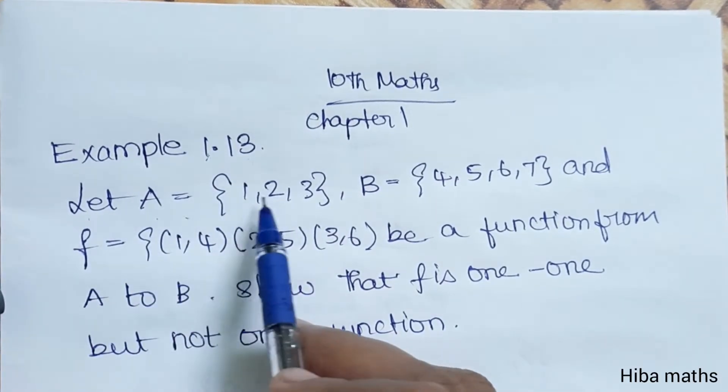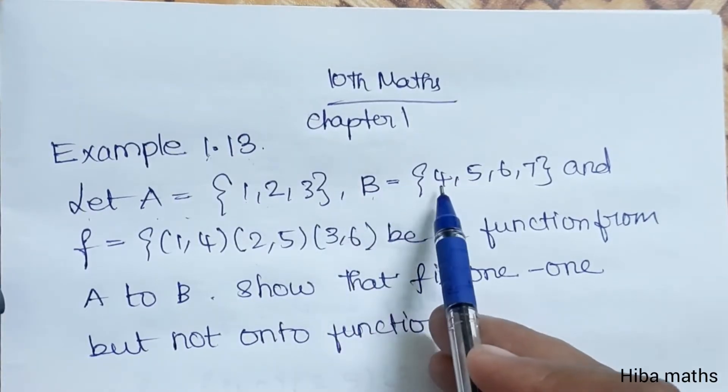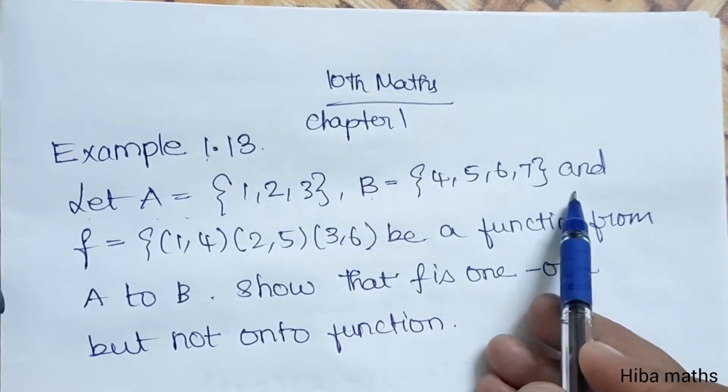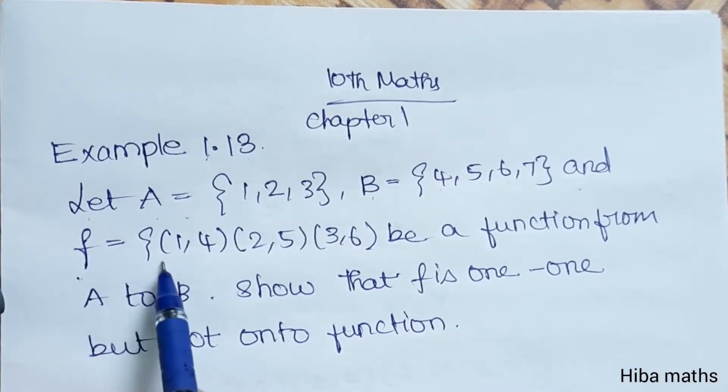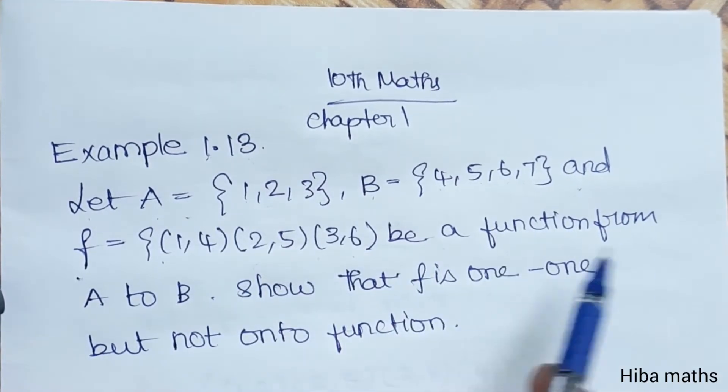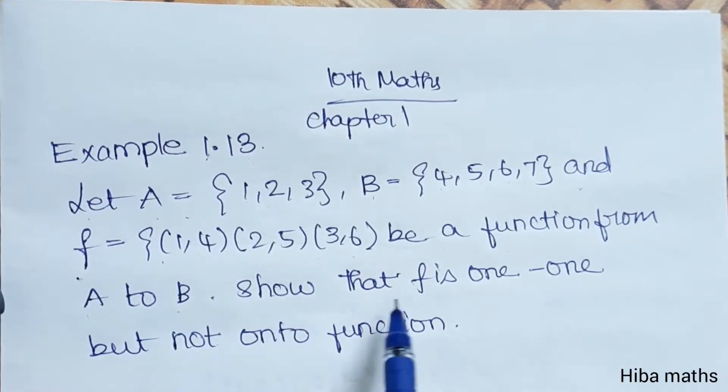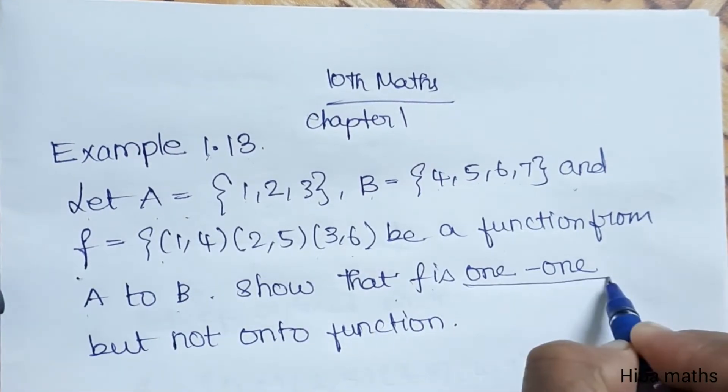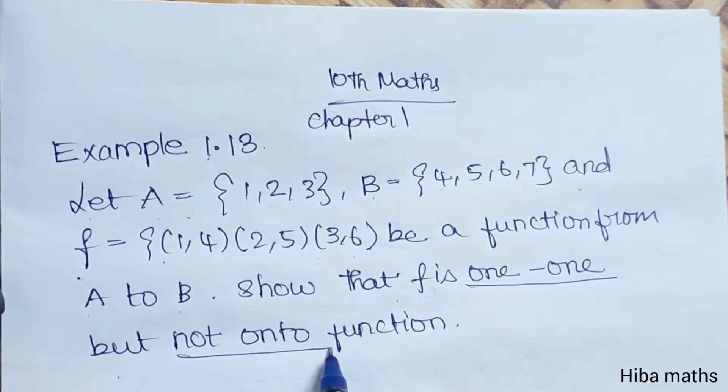Let A equals 1, 2, 3, B equals 4, 5, 6, 7, and function f equals (1,4), (2,5), (3,6) be a function from A to B. Show that f is one-to-one but not onto function.